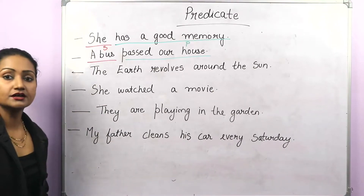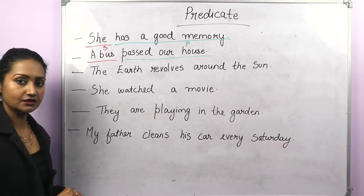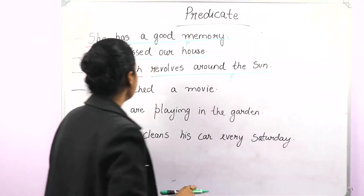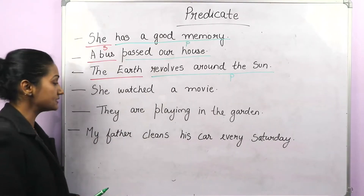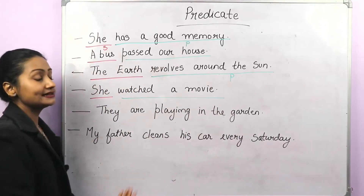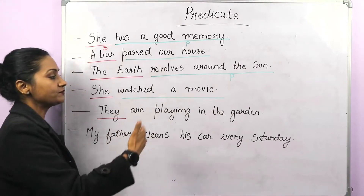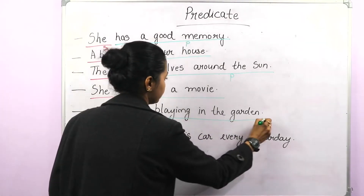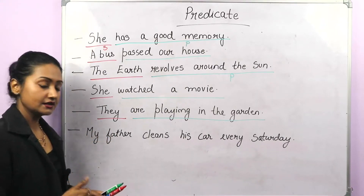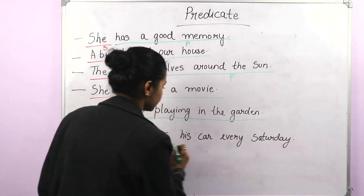'The earth revolves around the sun.' What revolves around the sun — who is the doer? The earth. So the earth is the subject, and 'revolves around the sun' is the predicate. 'She watched a movie.' Subject is 'she' and predicate is 'watched a movie.' 'They are playing in the garden.' Who is playing in the garden? They. So 'they' is the subject and 'are playing in the garden' is the predicate. 'My father cleans his car every Saturday.' Who cleans the car? My father — he is the doer. So 'my father' is the subject and 'cleans his car every Saturday' is the predicate.